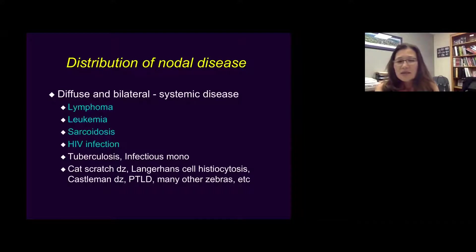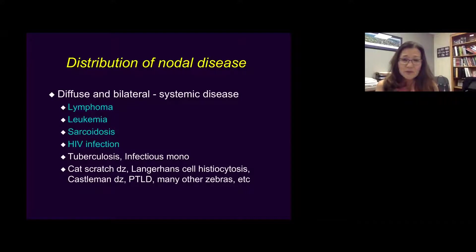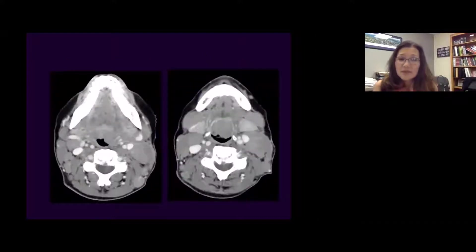In addition, there could be systemic diseases such as TB, infectious mono, cat scratch disease, and so forth. These systemic diseases will give you bilateral diffuse cervical lymphadenopathy. So let's test that.